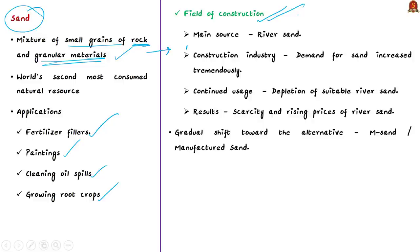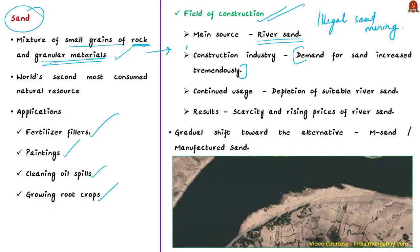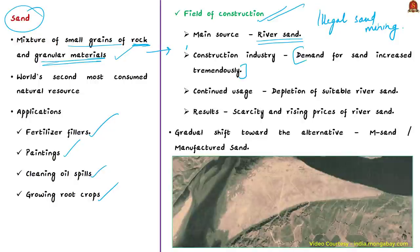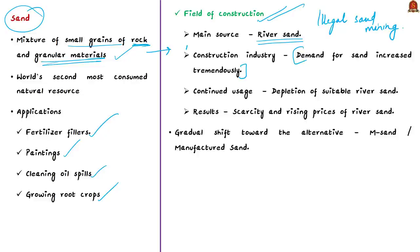Earlier, the main source of sand for construction was river sand. With the fast-growing construction industry, demand for sand increased tremendously, leading to illegal mining. This caused serious environmental issues — destroying habitats, changing the course of rivers, eroding riverbanks, and swallowing up villages in India and worldwide. Continued usage of river sand led to its depletion, causing scarcity and rising prices. This unprecedented hike in cost led to a gradual shift towards an alternative to natural river sand — and then came M-Sand.